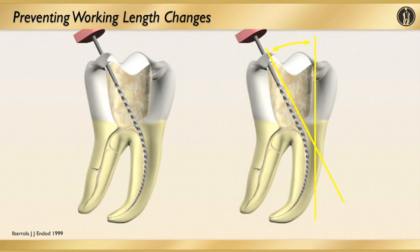Looking at this graphic, we're showing you the position of a file when it's initially placed into a canal. If you look at the graphic on the left, you're seeing the file placed into the canal while that triangular dentin is still in place. You can notice that the file curves a couple times in order to get to the apex. When you're using rotary instruments, you want those files to curve as minimally as possible. On the right graphic, it's showing you can reposition the canal orifice so that you get more of a straight line access.